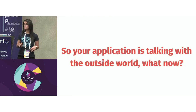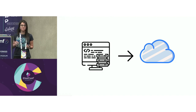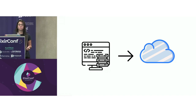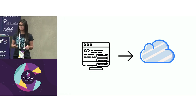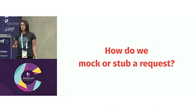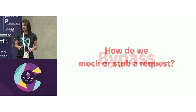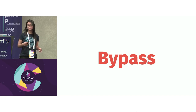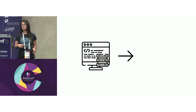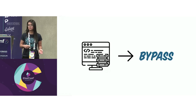So your application is talking to the outside world — what now? A very common day-to-day case in our application is relying on APIs and libraries. We don't want our tests to access the outside world because this is bad for testing — it can cause intermittent tests, long-running tests, and all this kind of stuff. So how do we mock or stub a request? There are some libraries that can help us. I will talk about two of them. The first one is Bypass, and it is a library that simulates an external server. It works to stub the layer closer to the request. The idea is that you remove the external layer and start calling Bypass instead.